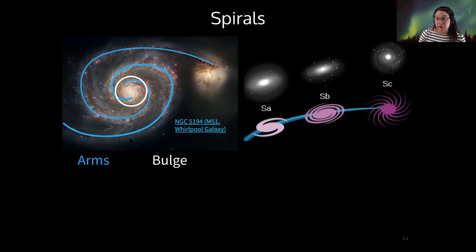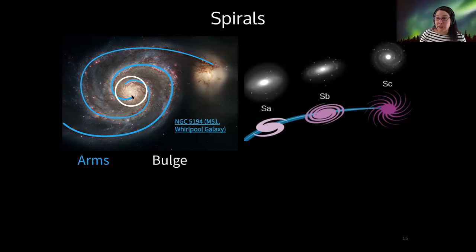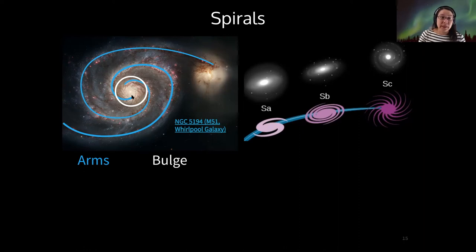We'll learn more about other features of spiral galaxies when we study the Milky Way, but for now these are the two main features. The bulge is very crowded — you can see it looks brighter than the rest of the galaxy. That's because it does have a lot more stars packed into it than are packed into the arms.